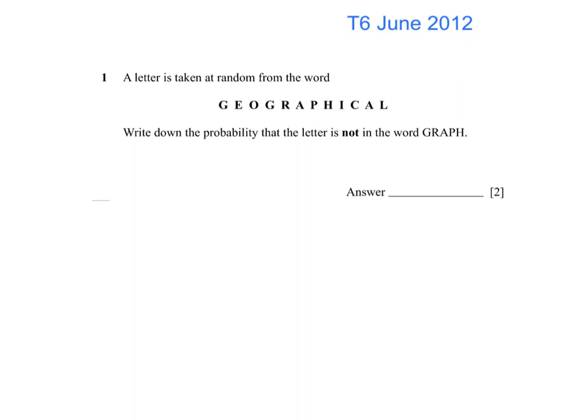That means that our probability is going to be out of 12. We're interested in the probability that the letter is not in the word graph. So I'm going to cross out all of the letters which are in the word graph. And I'm left with 1, 2, 3, 4, 5. So that is 5 twelfths.